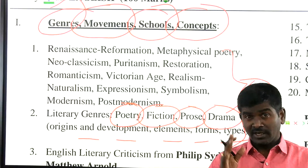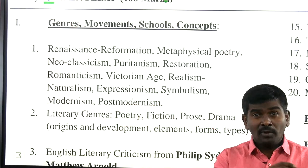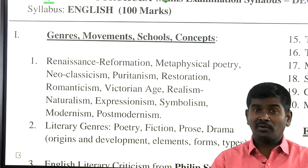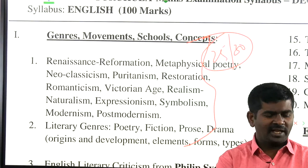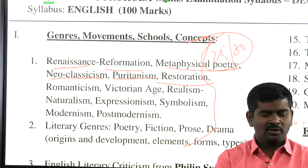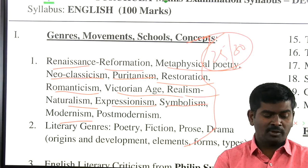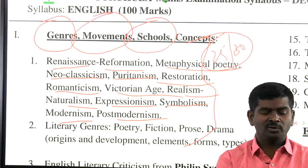When you focus on genres and movements, this is very important. Based on these aspects out of 150, you will definitely get 25 to 30. These aspects include Renaissance, Reformation, Metaphysical Poetry, Neoclassicism, Puritanism, Restoration, Provincialism, Victorian Age, Realism, Naturalism, Expressionism, Symbolism, Modernism, and Postmodernism — all different concepts covering genre, movement, school, and concepts.